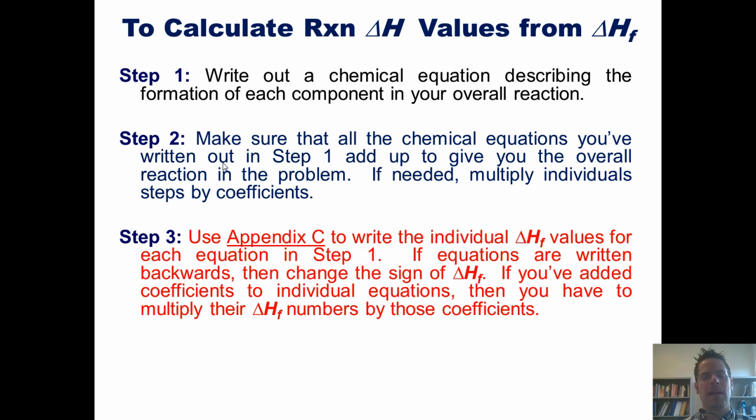Three, use Appendix C to write the individual enthalpy of formation values for each equation from Step 1. If the equations are written backwards, change the sign from negative to positive or vice versa. If we've added coefficients to individual equations, multiply their individual enthalpies of formation by those coefficients.